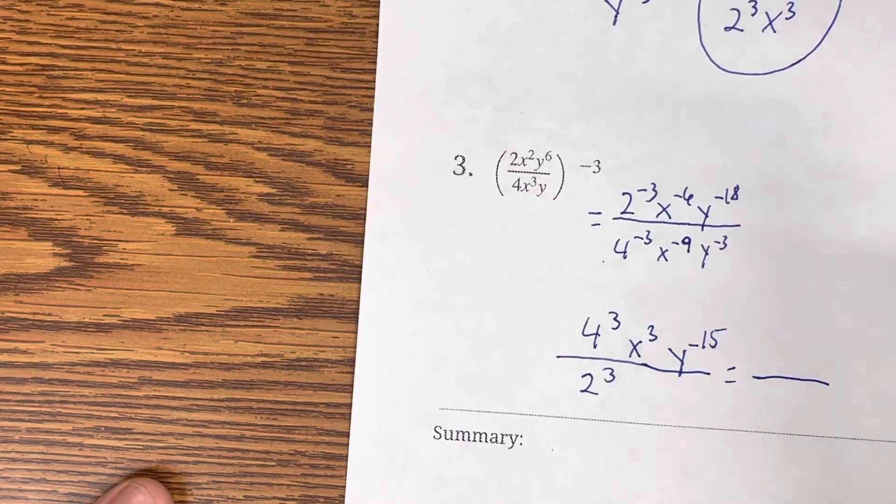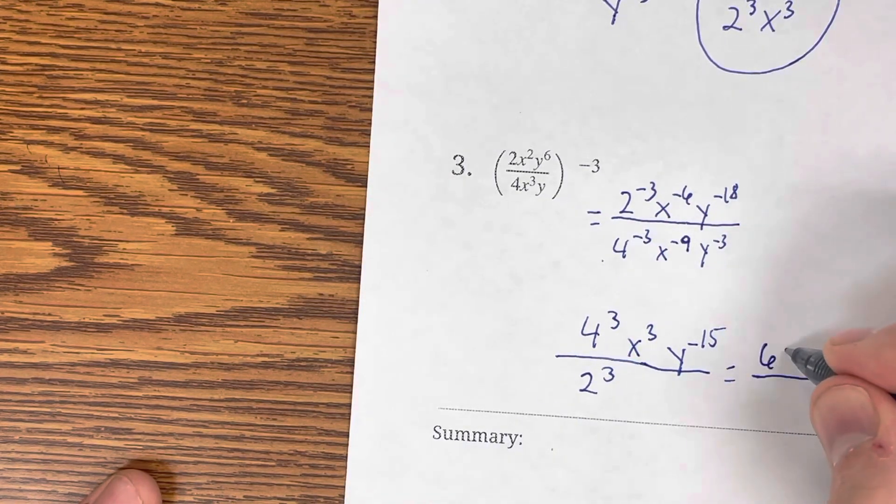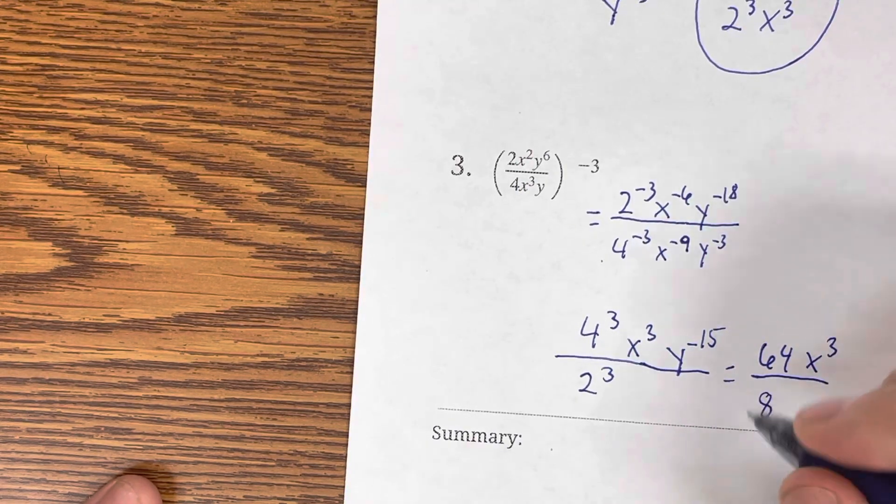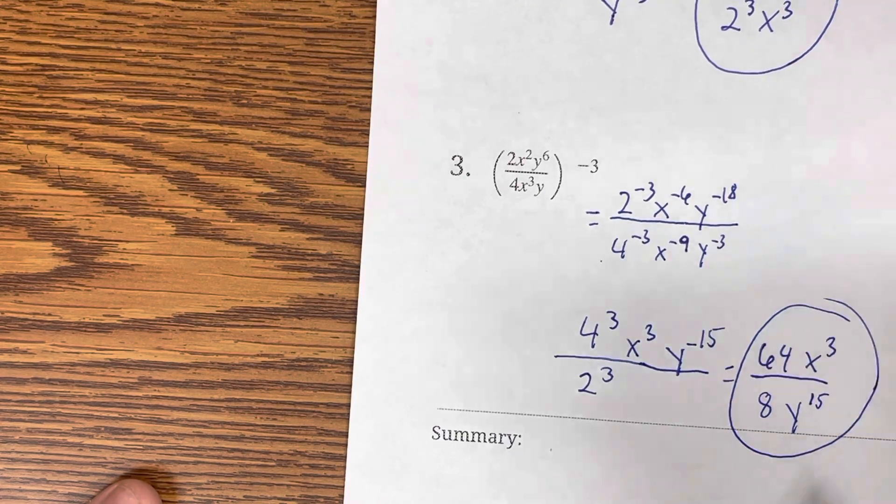But I am going to simplify this a little further. 4 to the 3rd is 64, x to the 3rd stays, 2 to the 3rd is 8, and y had to go down to the basement to make it a positive.